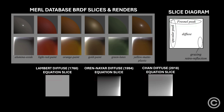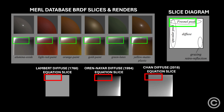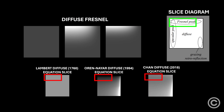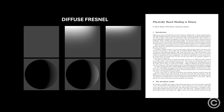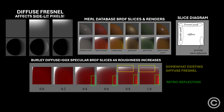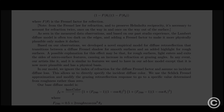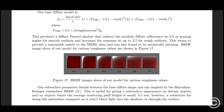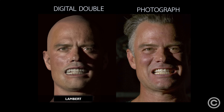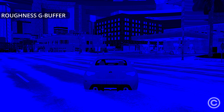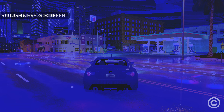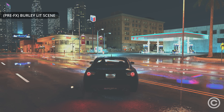But models like Oren-Nayar cannot produce other patterns found in the MERL database, such as the diffuse Fresnel and its falloff range. The 2012 Burley diffuse model implicitly alters the grazing retroreflection and diffuse Fresnel based on roughness, because they could trace this behavior to a physical basis as well as patterns noticed in the MERL database. This means with the Burley model, complex roughness maps not only change roughness, but also diffuse Fresnel and grazing retroreflection — providing an extremely rich image through quantifiable realistic aspects impossible to express with Lambert.